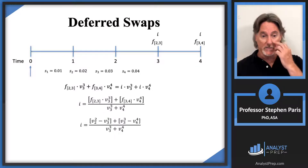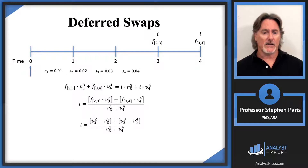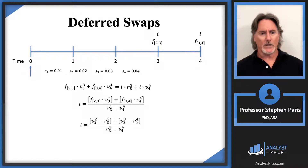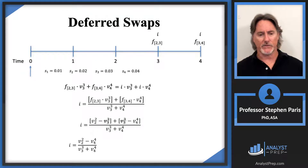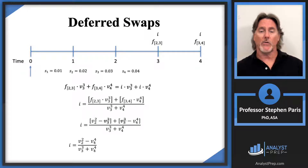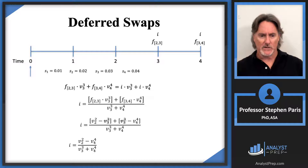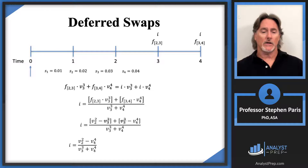Specifically, f_{2,3} times v-cubed equals v² minus v³, and in the second bracket, f_{3,4} times v⁴ equals v³ minus v⁴. This was covered in the learning video on level notional swaps. The numerator simplifies because the v³ terms cancel out — a telescoping sum — and I end up with the swap rate equal to the difference between v² and v⁴ in the numerator, divided by the sum of the v-values in the denominator.